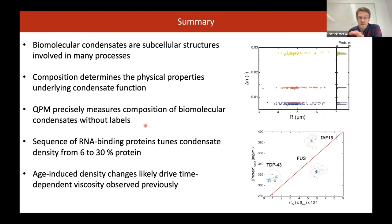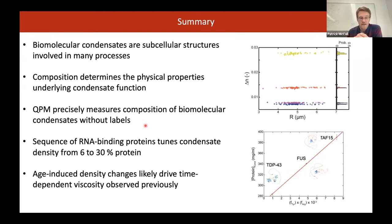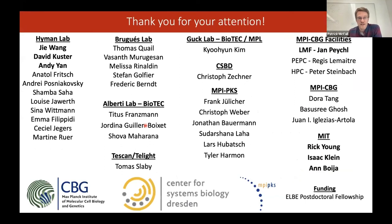Thanks so much, Patrick. That was amazing. I have a general question — you showed those beautiful images of the worm P granules. I was wondering whether you think it'll be possible to measure concentrations in vivo in the worm with QPI? A challenge for in vivo measurements is you need refractive index contrast between the two phases. Some careful work has shown that for several compartments, we don't always see refractive index contrast — the density of the droplet can be very similar to the density of the cytoplasm.